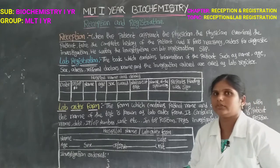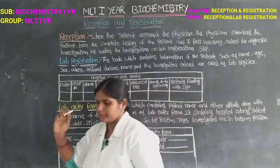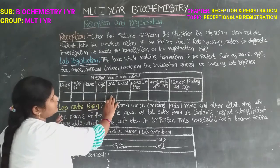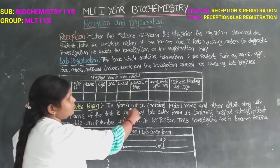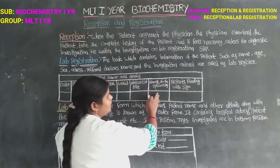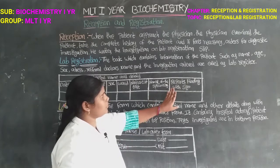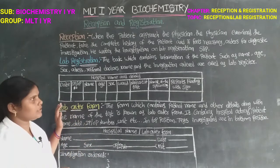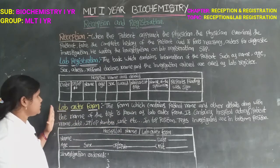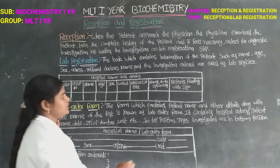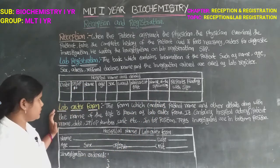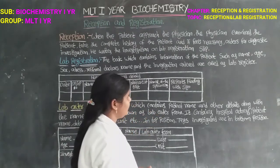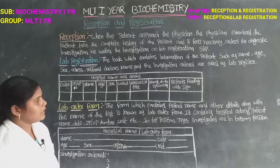The lab registration form includes the hospital name and its location, the date, the patient's IP or OP number, name, age, male or female, ward, nature of the test, name of the specimen, the sample type, the report findings, and the lab technician's signature.